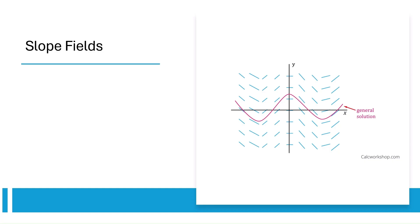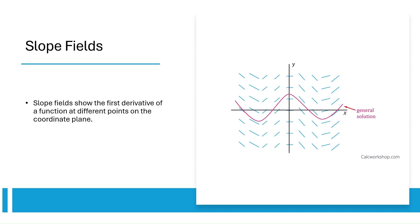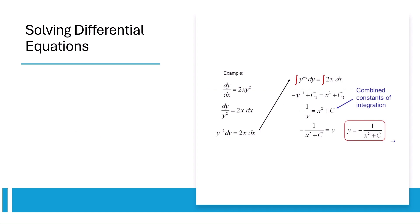The first topic in differential equations is slope fields. Slope fields show the first derivative of a function at different points on the coordinate plane. When the slope is bigger, you depict this by using a longer arrow, and you have to make sure that your arrows don't cross. When you get a problem asking for the particular solution of a differential equation, it means that you have to plug in some initial condition to get a specific function. When a problem asks for the general solution, you're usually leaving a plus C or multiplying by some constant that hasn't been solved for yet.